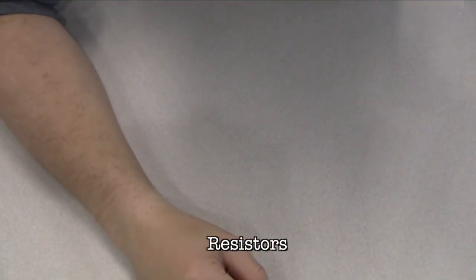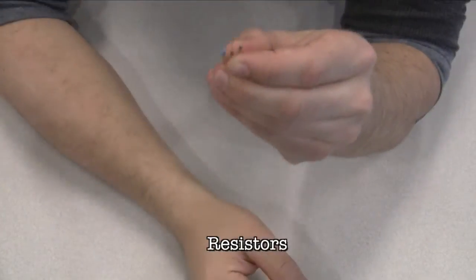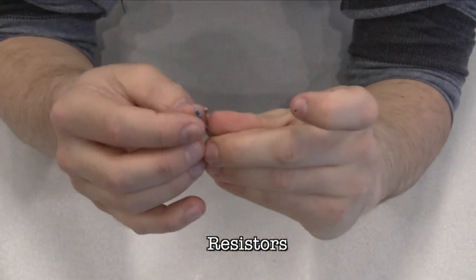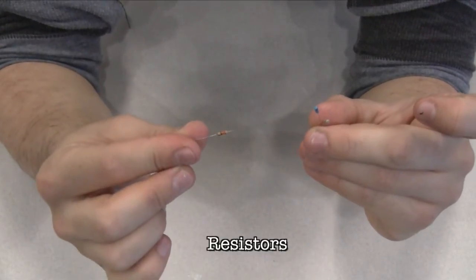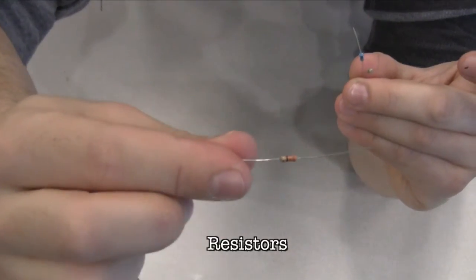Resistors resist the flow of electrical energy in a circuit, changing the voltage and current as a result. Resistor values are measured in ohms, which is represented by the Greek omega character. The colored stripes on the sides of resistors indicate their value.